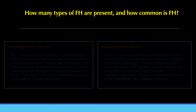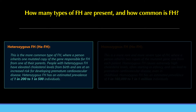How many types of familial hypercholesterolemia are present, and how common is FH? FH is often underdiagnosed and undertreated, with many people unaware they have the condition. There are two types. Heterozygous FH is the more common type, where a person inherits one mutated copy of the responsible gene from one parent. People with heterozygous FH have elevated cholesterol levels from birth and are at increased risk for premature cardiovascular disease. Its estimated prevalence is 1 in 200 to 1 in 500 individuals.